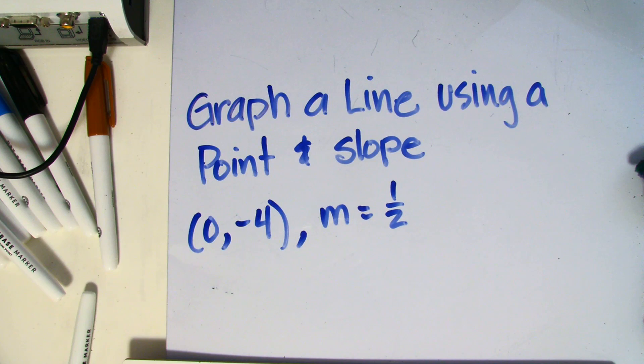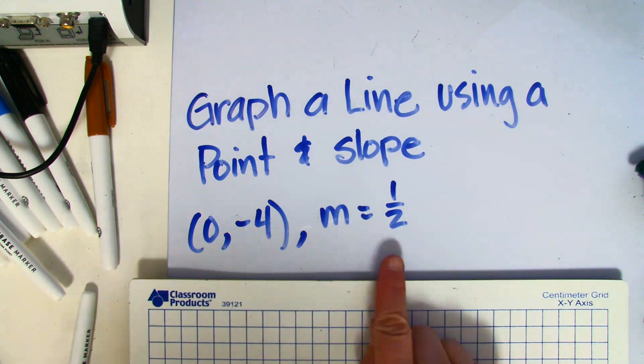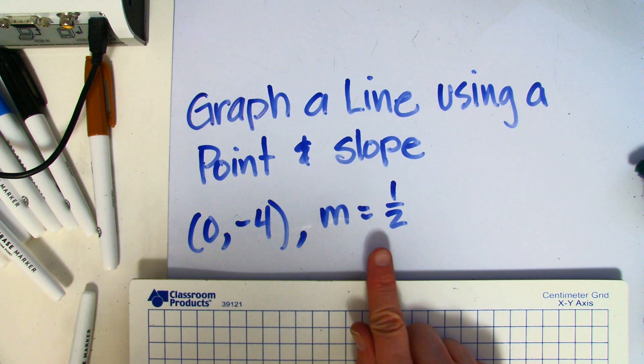So if we look at this example, we have a point (0, -4), and the slope is going to be 1/2, or 1 over 2. Notice that this slope is a positive number, so we should see an increasing or positive line on our graph.